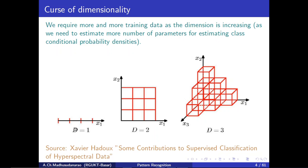To estimate the histogram for a particular class — say class 1 if there are 2 classes — we need to estimate 3 parameters for the class 1 likelihood function, and 3 more parameters for the class 2 likelihood function from the corresponding training data. So for each class, we need to estimate 3 parameters when d=1.